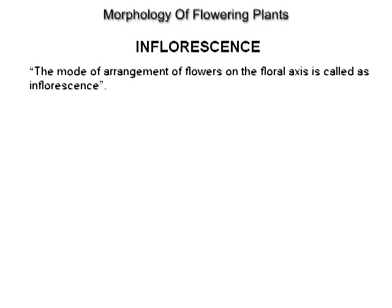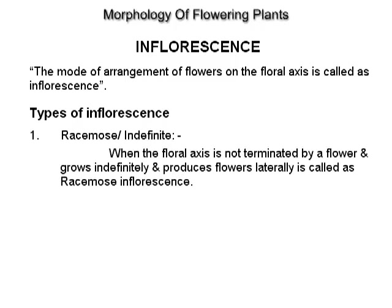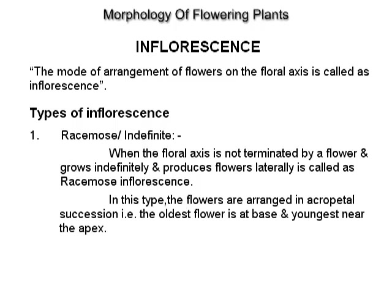Inflorescence. The mode of arrangement of flowers on the floral axis is called inflorescence. Types of inflorescence. Racemose or indefinite: when the floral axis is not terminated by a flower and grows indefinitely and produces flowers laterally, it is called racemose inflorescence. In this type, the flowers are arranged in acropetal succession, i.e. the oldest flower is at the base and the youngest is near the apex. Example: Caesalpinia, Gulmohar.